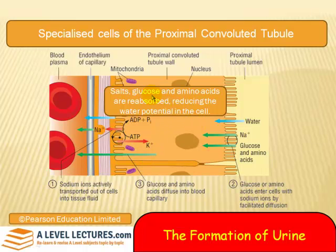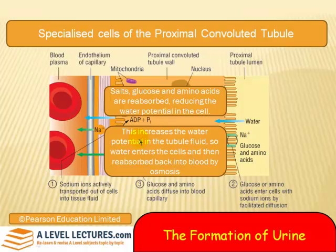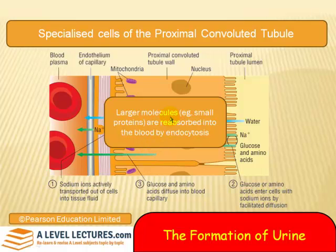Salts, glucose, and amino acids being reabsorbed reduces the water potential in the cell, so water moves into the cell from the lumen. This increases the water potential in the tube fluid; water enters the cells then is reabsorbed back into the blood by diffusion, as there is a higher water concentration in the cell than in the capillary. Large molecules — such as the smaller proteins with molecular weights less than 69,000 — are reabsorbed into the blood by endocytosis.